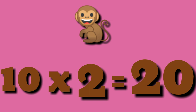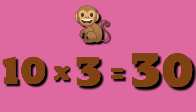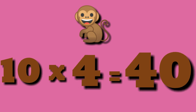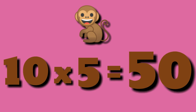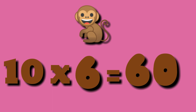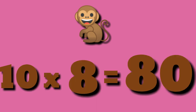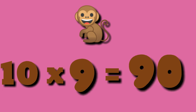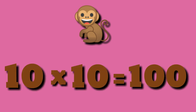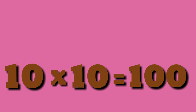Table of 10. 10 ones are 10, 10 twos are 20, 10 threes are 30, 10 fours are 40, 10 fives are 50, 10 sixes are 60, 10 sevens are 70, 10 eights are 80, 10 nines are 90, 10 tens are 100.